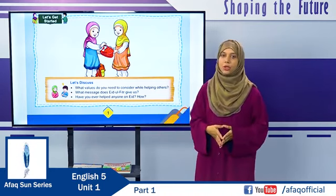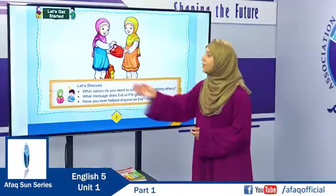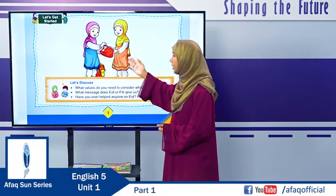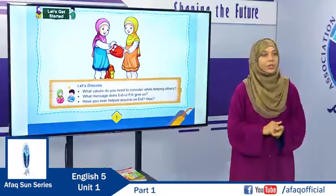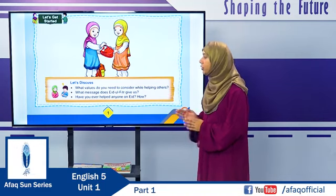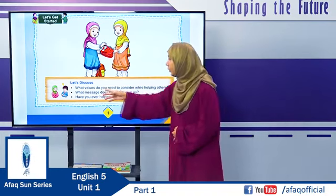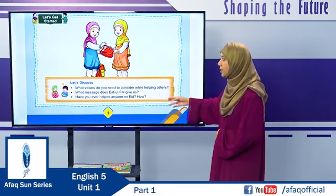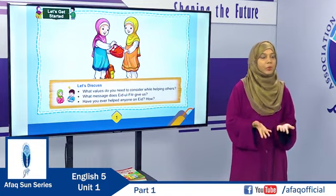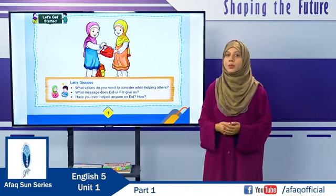There are two girls in this picture. The girl in the blue dress is giving something — yes, a dress — to the other girl. She is sharing the dress with her friend. There are three questions on page 1 related to this picture. The first question is: what values do you need to consider while helping others? We should take care of their dignity, not hurt it, and always respect the people we are helping.